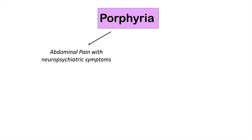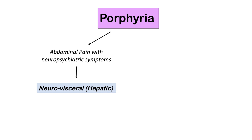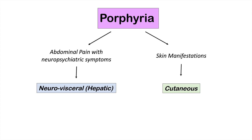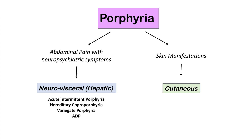We can categorize porphyria conditions by symptoms. There's one class of porphyria conditions with abdominal pain and neuropsychiatric symptoms - these are known as the neurovisceral porphyria conditions. In the class of neurovisceral porphyria conditions, we have acute intermittent porphyria, hereditary coproporphyria, variegate porphyria, and ADP.